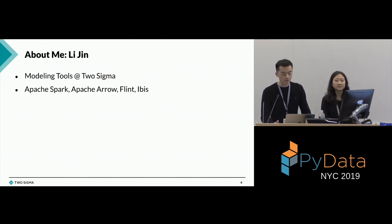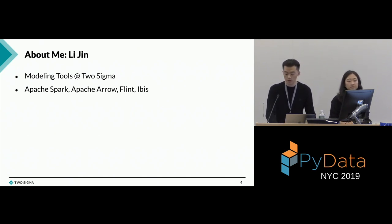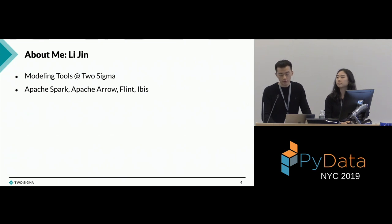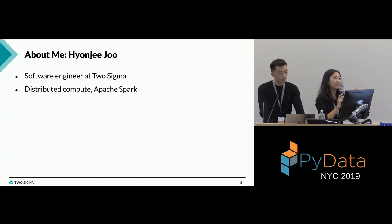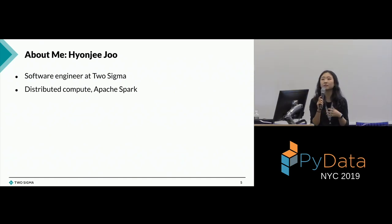Before we start, just a quick introduction. My name is Li Jing. I'm a software engineer working at Two Sigma, working on a modeling tools team which builds platforms using open source technologies. I've been mostly working on a lot of open source projects, including Apache Spark, Apache Arrow — an open source library that delivers high performance in-memory data format — and Flint, a time series library on top of Apache Spark. And today we're going to talk about IBIS. And this is my colleague, Hong Ji. Hi everyone, my name is Hong Ji. I'm also a software engineer at Two Sigma, and I work with Li mostly focused on building out distributed compute capabilities using open source tools like Apache Spark.